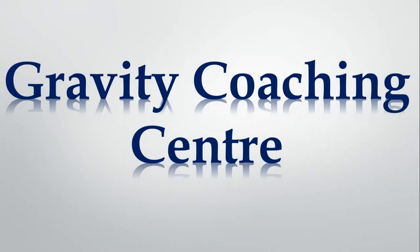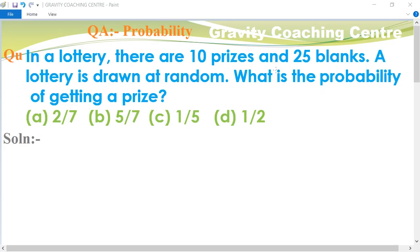Welcome to our channel Gravity Coaching Centre. Quantitative aptitude chapter probability. Question: In a lottery, there are 10 prizes and 25 blanks. A lottery is drawn at random. What is the probability of getting a prize?